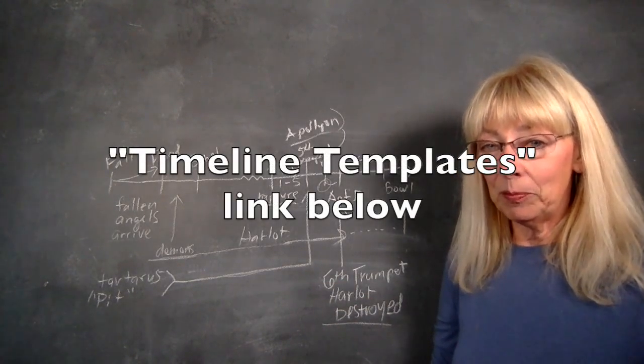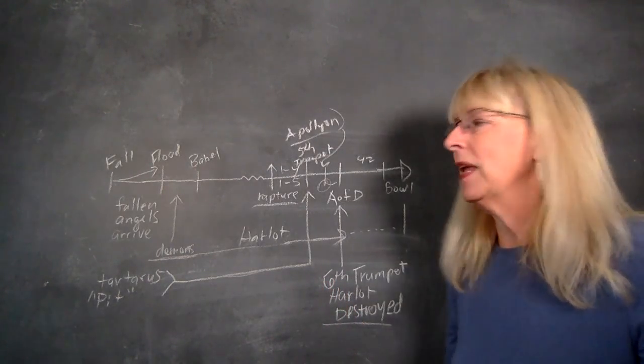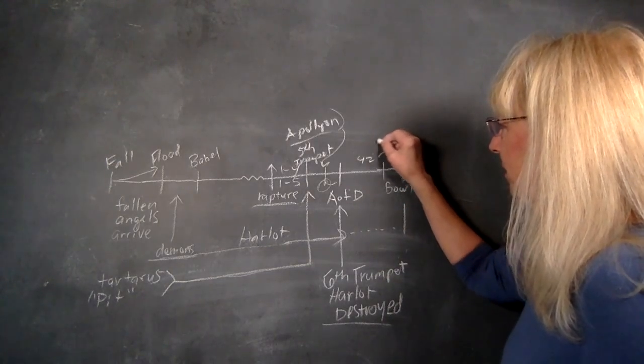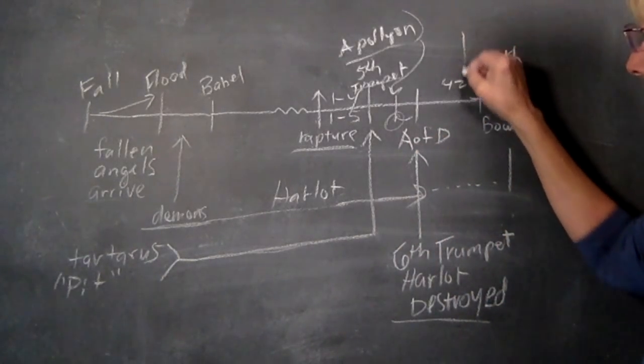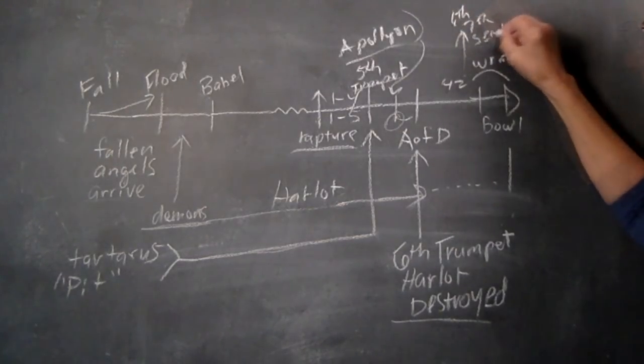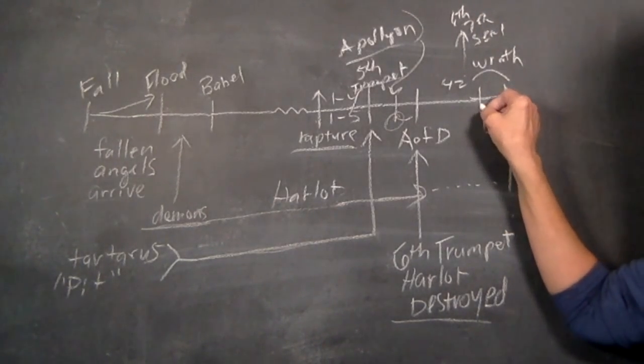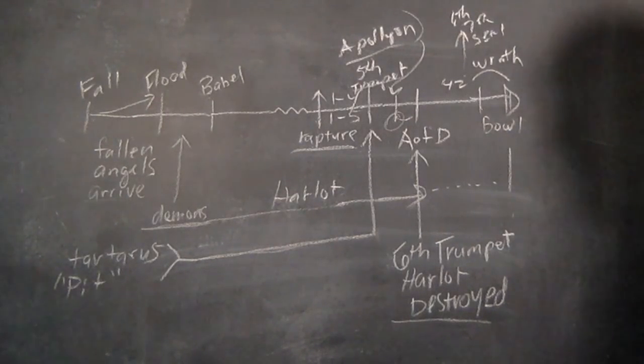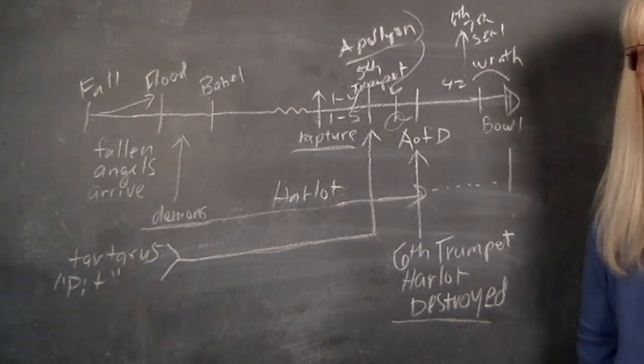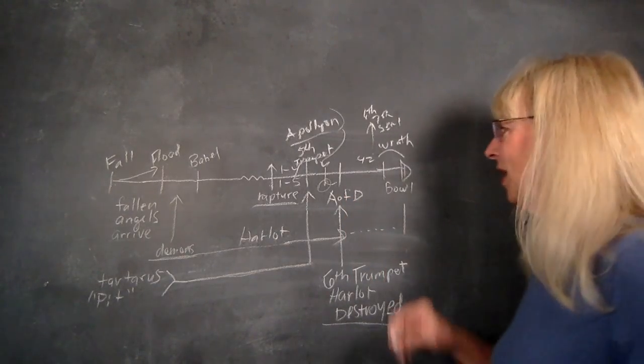The wrath of God is right here with the bowls, and it's going to start with the sixth and seventh seal—the sun going dark, the moon turning to blood, before the great and terrible day of the Lord. Then, at the very end here of this 42 months, 1,260 days, Christ will return at Armageddon, and that'll be that. Then we'll have the millennial reign.